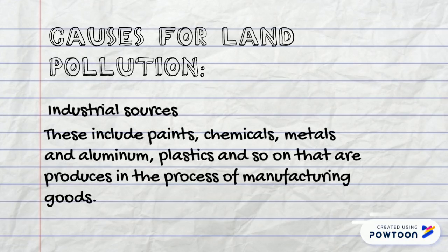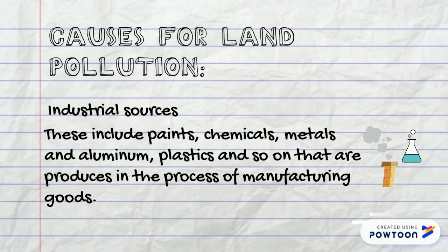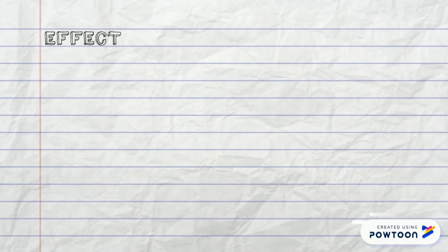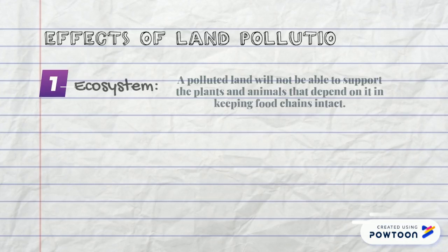Iron and other chemicals such as copper, mercury, and lead from mining practices leach into the soil, polluting it. Third, industrial sources — these include paints, chemicals, metals, aluminium, plastic, and so on that are produced in the process of manufacturing goods.